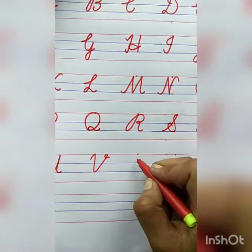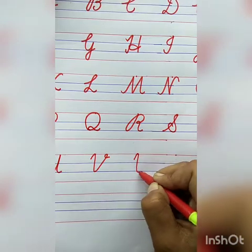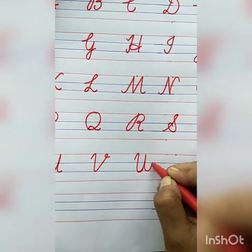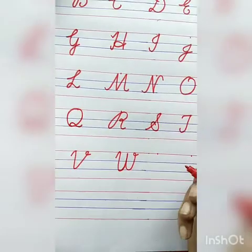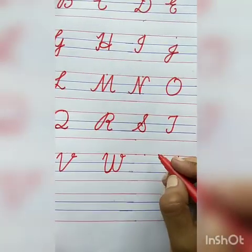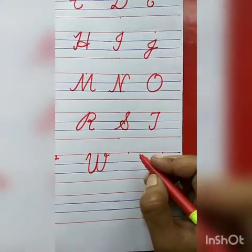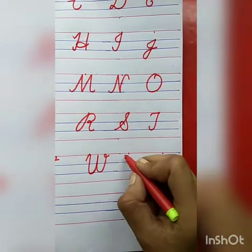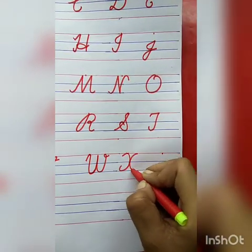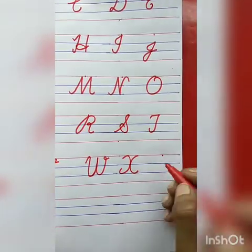Now V for van ke baad kaunsa letter aata hai, children? W for watch. Curve, slanting line, curve, slanting line, curve, and loop. W for watch. The spelling of watch: W-A-T-C-H, watch. Now tell me the next letter. X — very good! X for X-ray. Semicircle, semicircle. X for X-ray.